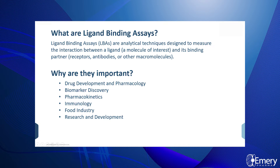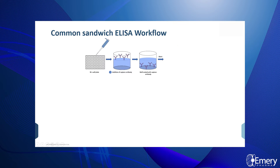Here, we will discuss one of the most common types of LBA. Enzyme-linked immunosorbent assay, or ELISA, relies on the specificity of antibodies to capture and detect the target molecule.